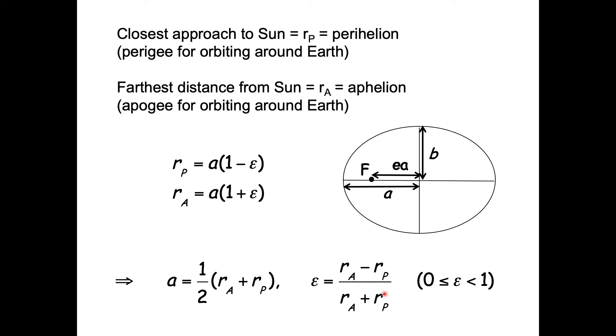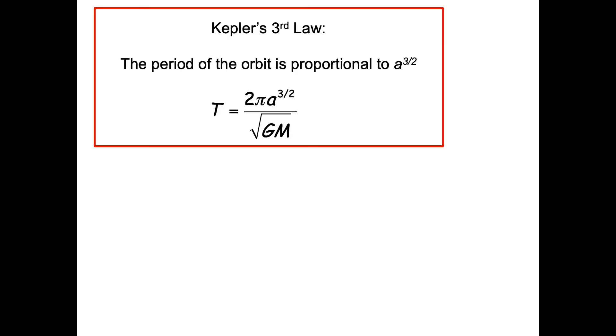Kepler's third law states that the period of an orbit is proportional to A to the three halves power. T equals 2π A to the 3/2 over the square root of GM, to be more precise. That's the proportionality constant. A here is the semi-major axis. This is easy to prove for a circular orbit. If you set A equal to R, you end up getting that the period is equal to 2πR over V circ.